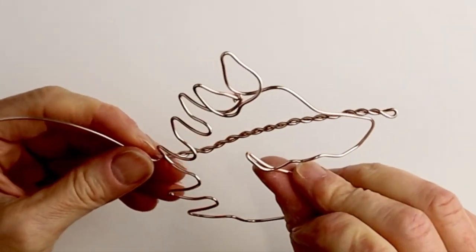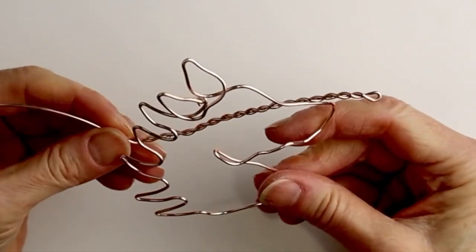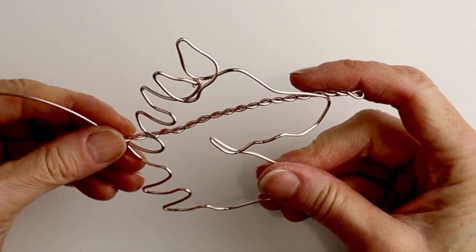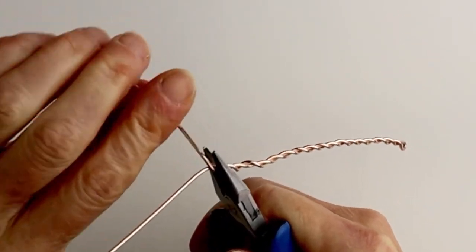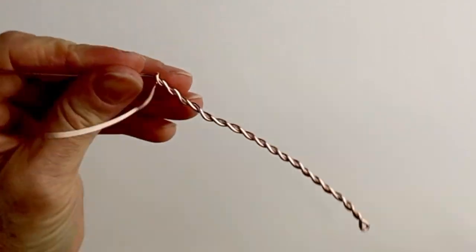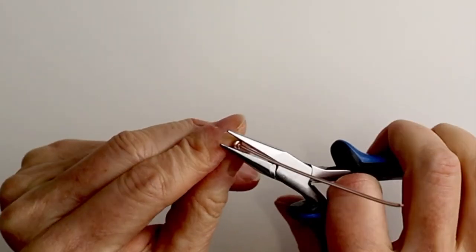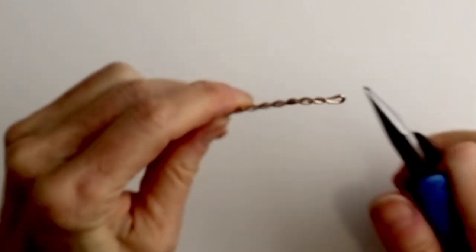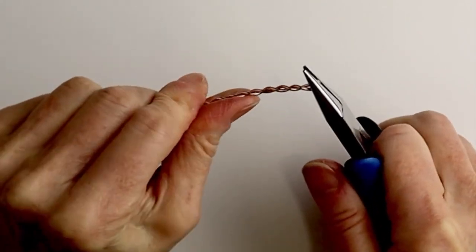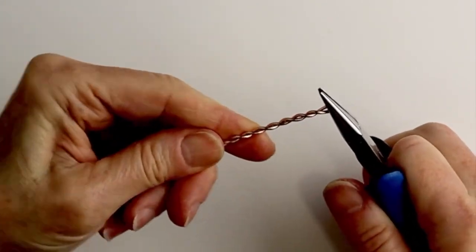So just measure it to make sure it's long enough to go across the horse. And then we're going to twist one end around and clip it. Pinch it in so it's not scratchy. And now we're going to straighten out the stick.